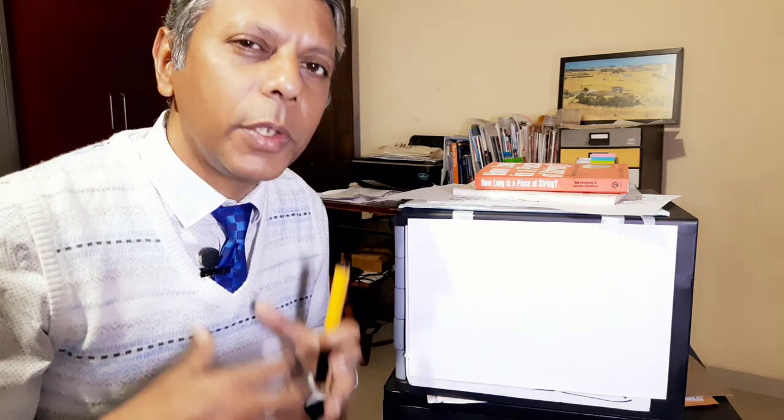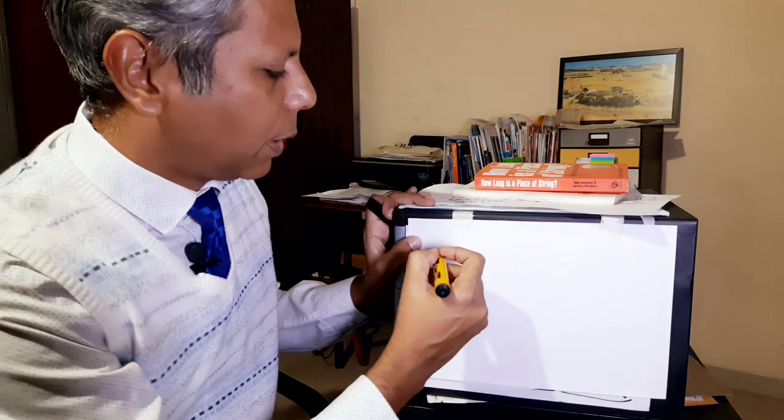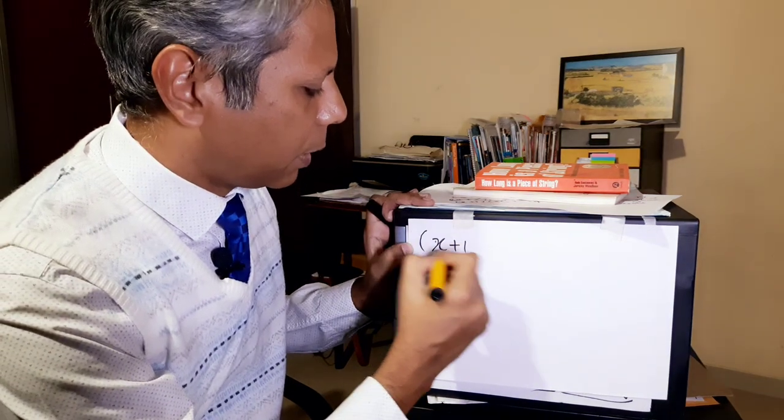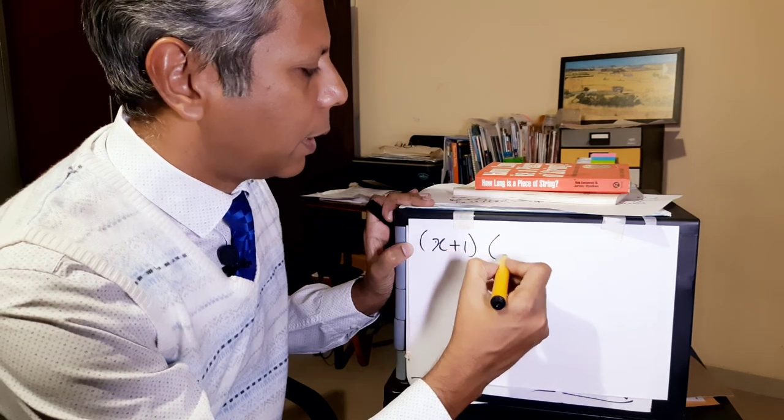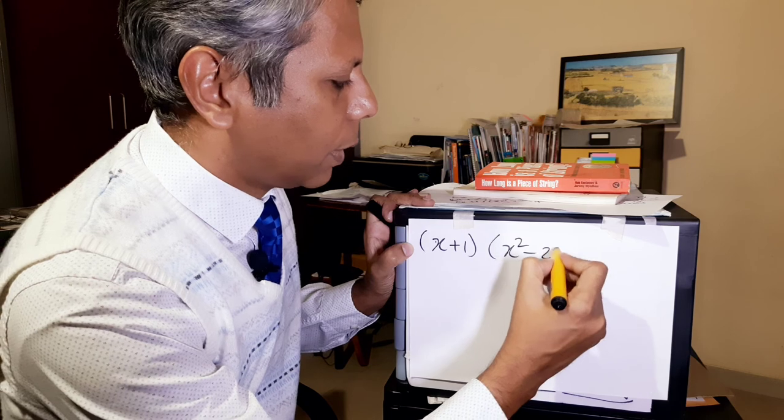There is not too much new theory or new knowledge I'll be telling you, but a couple of small tricks. Alright, let's take the problem. Here we have an expression x plus 1, and we would like to multiply it with x squared minus 2x plus 1.